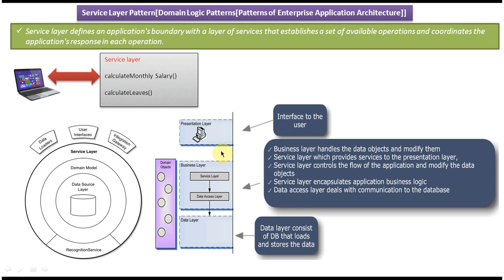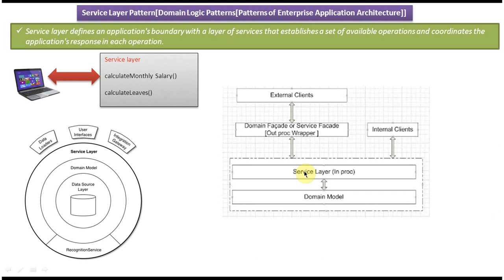The service layer provides services to the presentation layer. We can also use a domain facade or service facade with the service layer. If an internal client is present, it makes calls directly to the service layer. If an external client is present, we define a domain facade or service facade between them — the external client calls the facade, which then calls the service layer. A separate video on the facade design pattern is available on this channel. Thanks for watching.